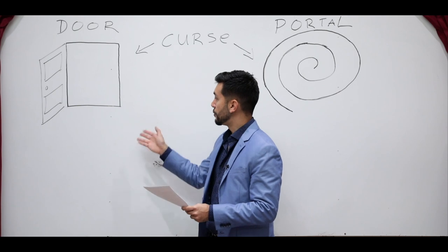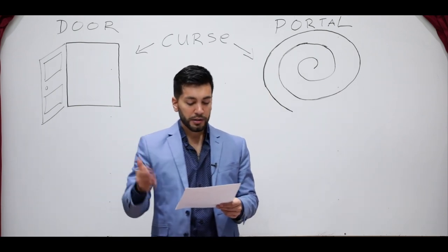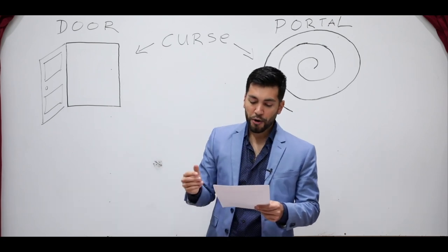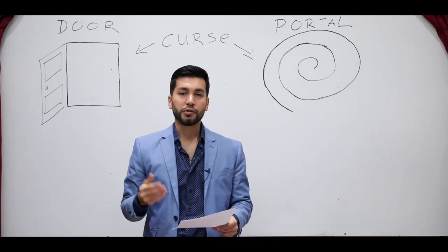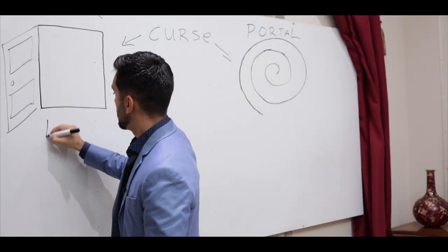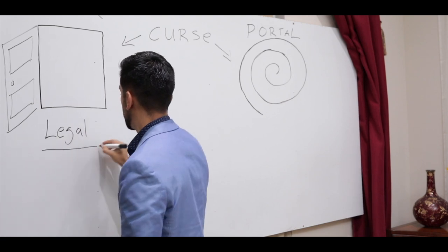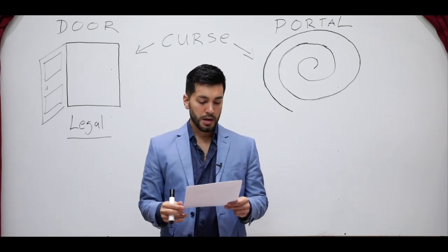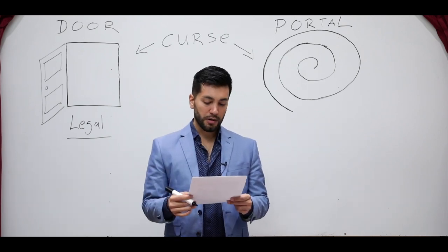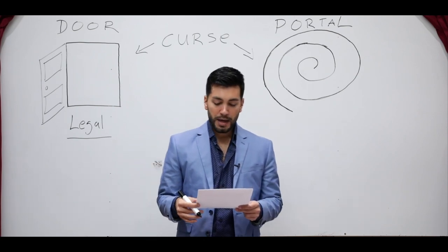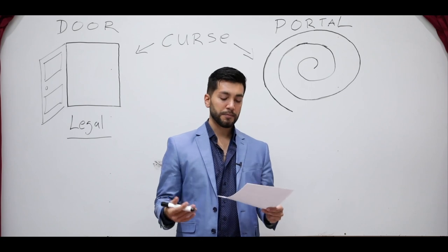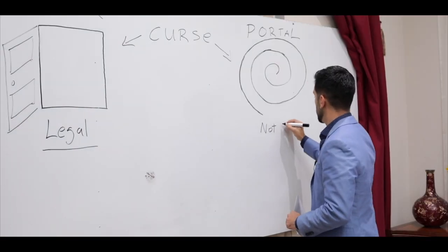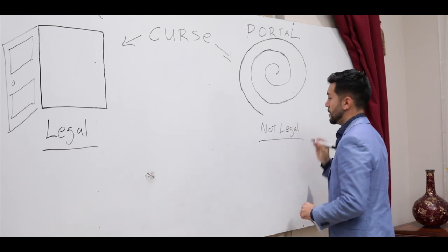The door is something that is direct, that is voluntary, that is self-inflicted — a self-inflicted curse. By breaking the commandments, it's an opening through sin. And very important: it's legal. That means the enemy has legal right to enter because it's a door that you open. A portal is indirect. It's involuntary. It's not self-inflicted, and it's not by breaking the commandments or through sinning. It's not opened by sinning. So that means it's not legal.